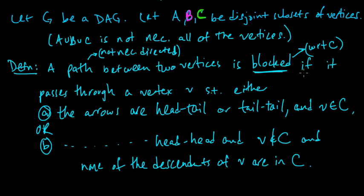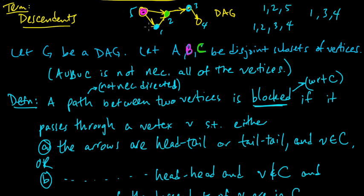Let's think about this little graph. C is the set we're conditioning on. The path 1, 2, 3, 4 is blocked because it passes through vertex 2. Vertex 2 is in C, and the relationship between the arrows — the arrow from 1 to 2 and 2 to 3 — is a head-to-tail relationship. So that path is blocked.